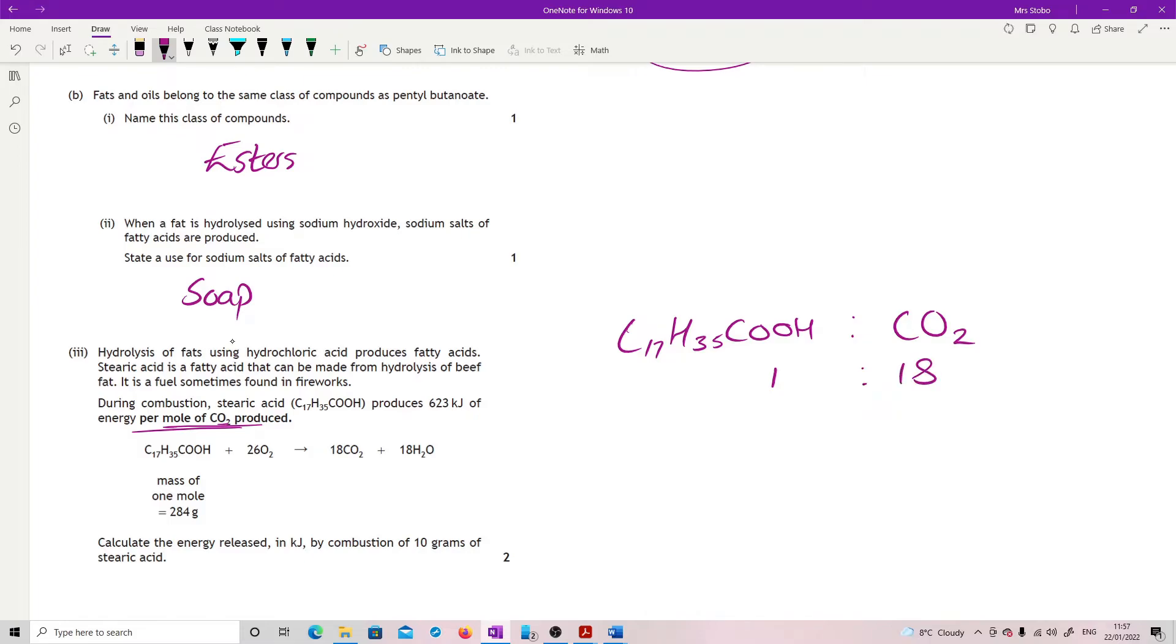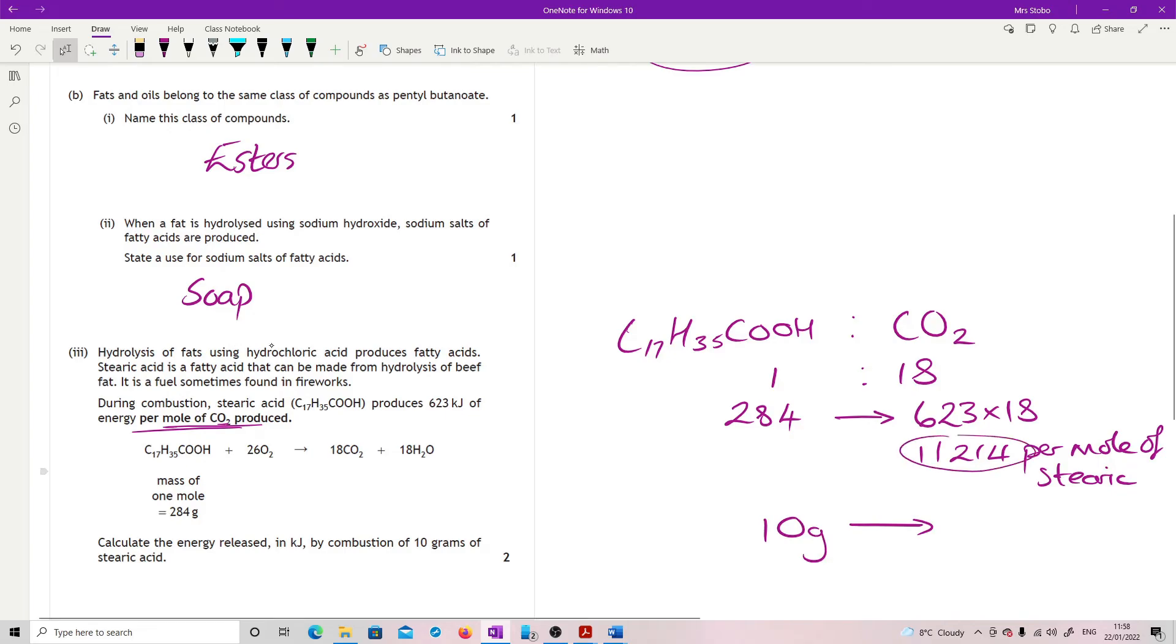So 284 grams of this gives you how many moles of carbon dioxide? We need to multiply that by 18. So it gave us 623 kilojoules times 18 for every one mole of carbon dioxide, sorry, every one mole of the stearic acid. So 11,214 per mole of the stearic. You're not done by any manner of means. But then you just need to do a very simple proportion. 10 grams therefore gives you what? So you do 10 divided by 284 times by this number gives you 394.859. So we're going to go 395 kilojoules per mole.